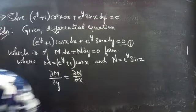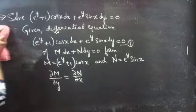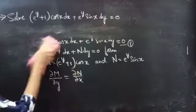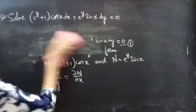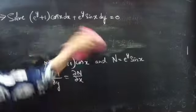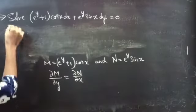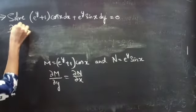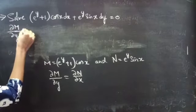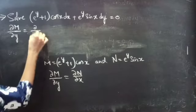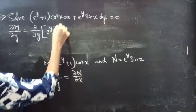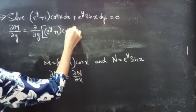So firstly we will find the partial derivative of M with respect to y and the partial derivative of N with respect to x. Partial derivative of M with respect to y equals the partial derivative with respect to y of e power y plus 1 into cos x.